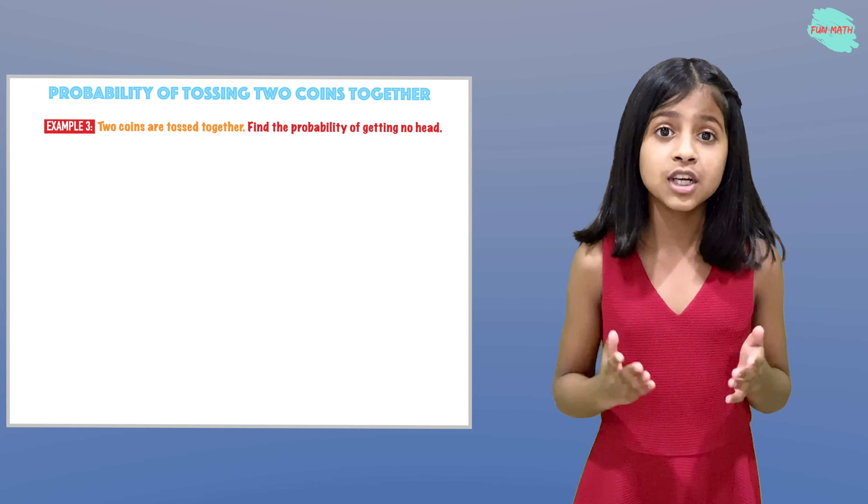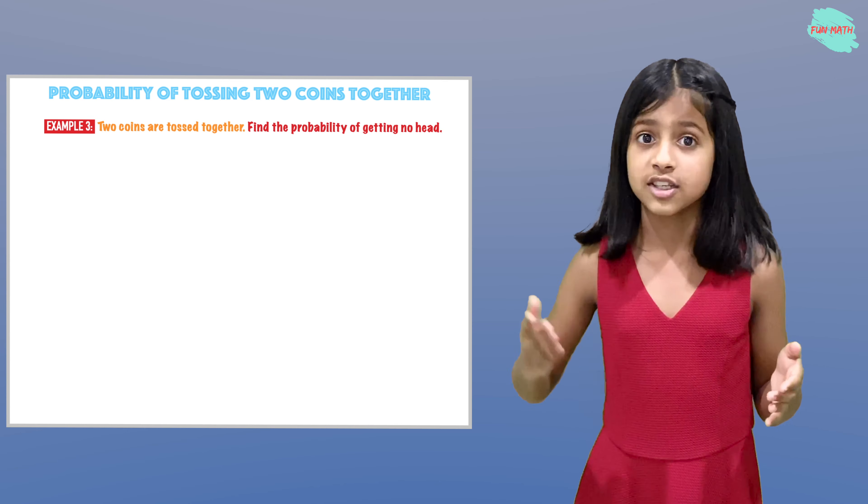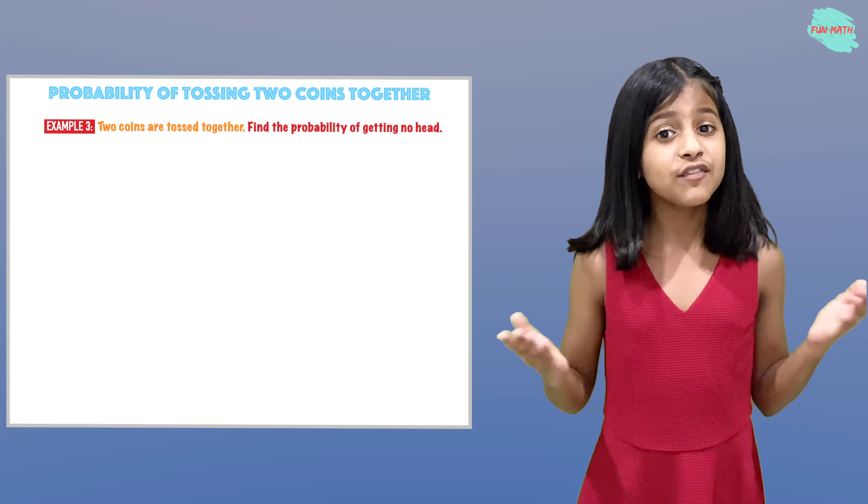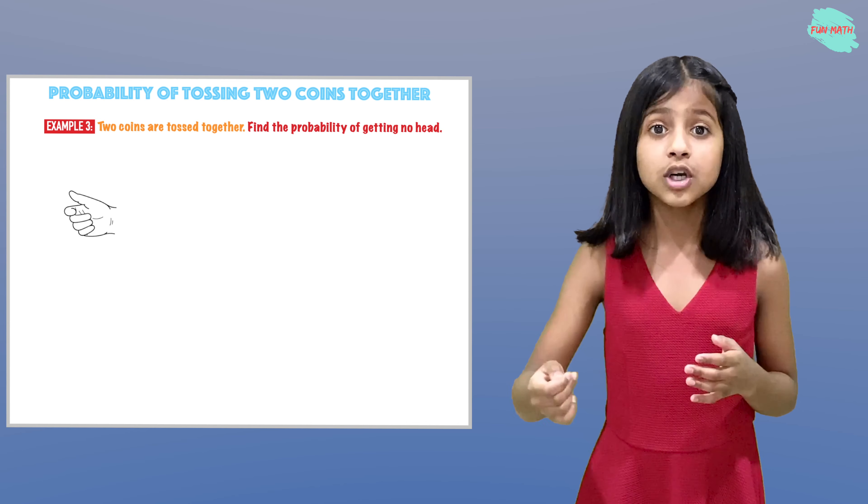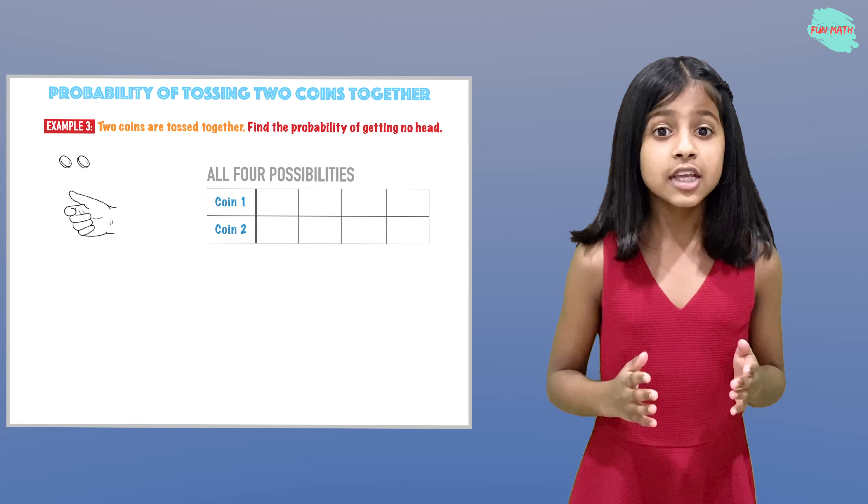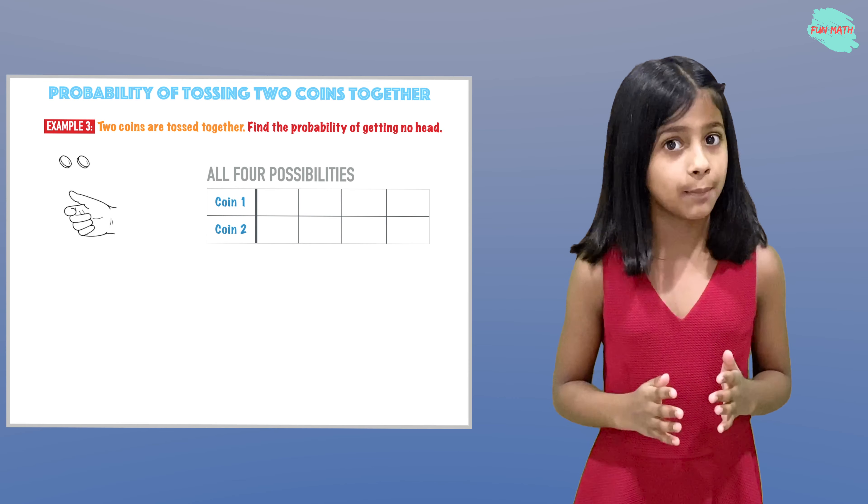Our problem is: two coins are tossed together. We have to find the probability of getting no head. When tossing two coins together, there are four possibilities. Let's talk about that.